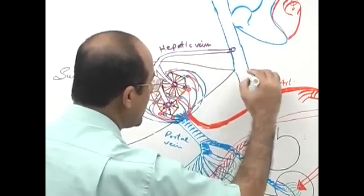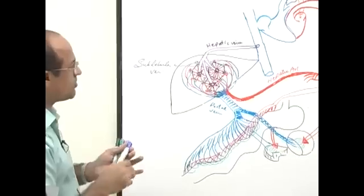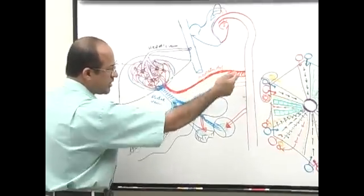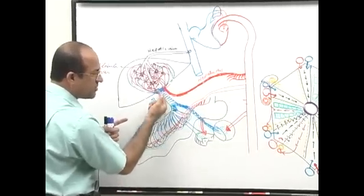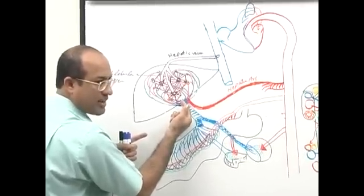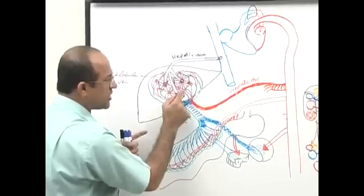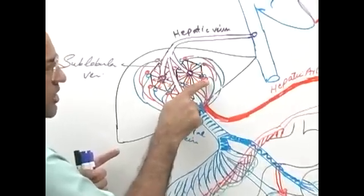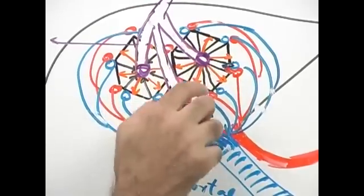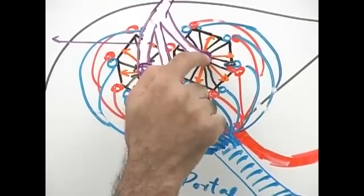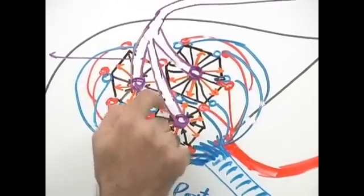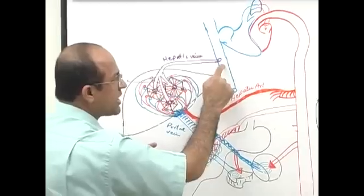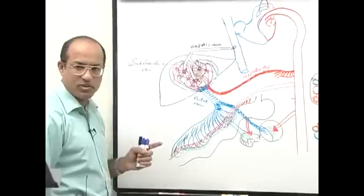So the liver's circulatory system works as follows: two input systems — hepatic arterial input and portal venous input — make branches at the corners of the classical lobule. Blood from both systems drains into the hepatic sinusoids, moving from periphery to center, collecting into the central vein, then into sublobular vein, then hepatic vein, and finally into the inferior vena cava, returning to the right heart.